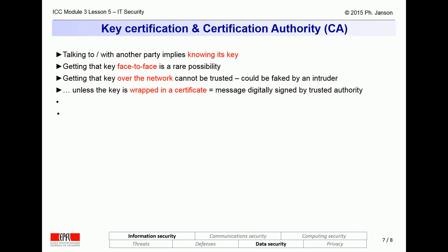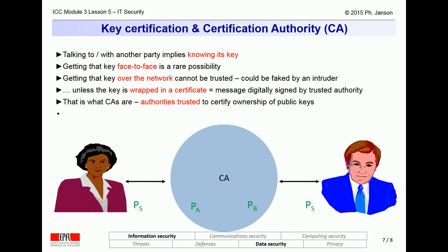Indeed, if Alice and Bob exchanged their own public keys via email, an intruder could intercept the emails and replace both public keys with ones it made up, for which it knows the matching private keys. That way, Alice and Bob would exchange signed and confidential messages thinking they were talking to one another, when in fact they would be talking to the intruder. In practice, such chicken-and-egg problems are solved by resorting to so-called certification authorities, called CAs, which are trusted by all parties. Everyone registers their own public key with a mutually trusted CA face-to-face or via some trusted channel outside the network.